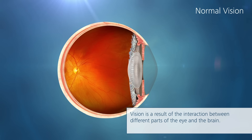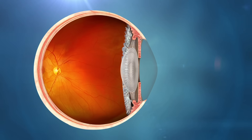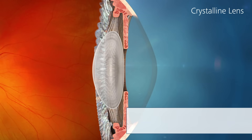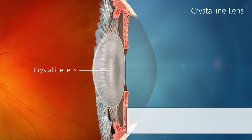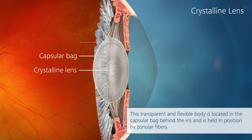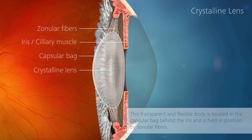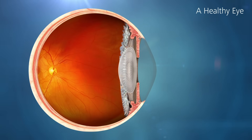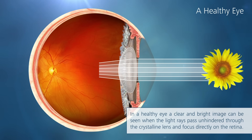Vision is a result of the interaction between different parts of the eye and the brain. The quality of vision depends to a high extent on the performance of the natural lens, also called a crystalline lens. This transparent and flexible body is located in the capsular bag behind the iris and is held in position by zonular fibers. In a healthy eye, a clear and bright image can be seen when the light rays pass unhindered through the crystalline lens and focus directly on the retina at the back of the eye.